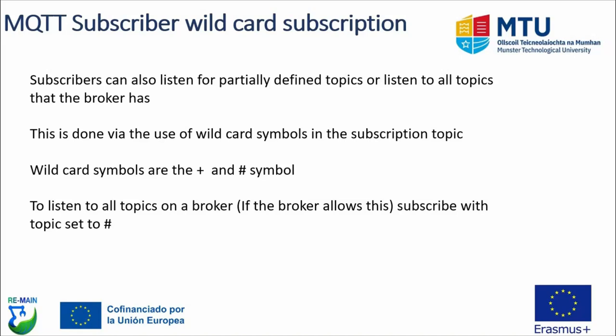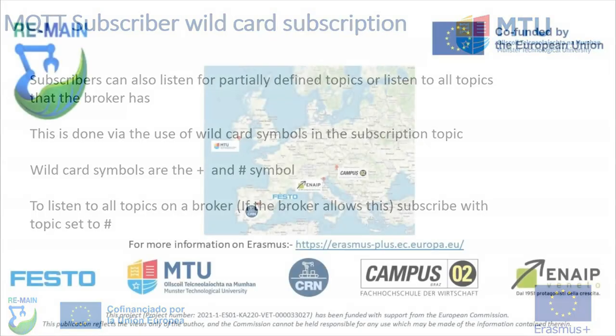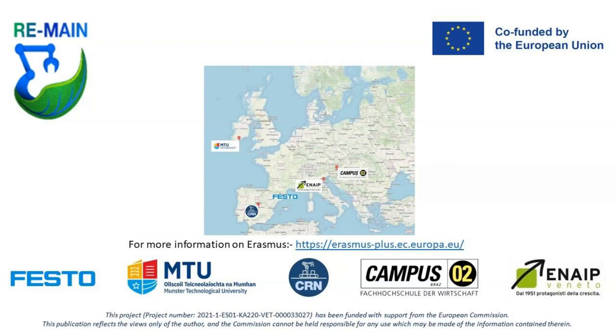Subscribers can also listen for partially defined topics or all topics using wildcards — the plus symbol and hash symbol — as discussed when covering topics. If you want to listen to all topics on a broker, assuming the broker allows it, you can subscribe with the topic set to hash (#), which will capture every single message going through the broker. This is generally not recommended, but can be useful for general debugging. That concludes the general introduction to MQTT — thank you for paying attention, and upcoming lessons will demo actual real MQTT applications.